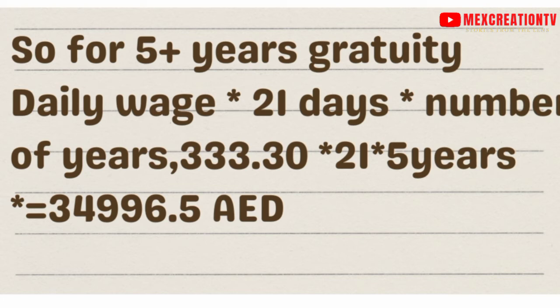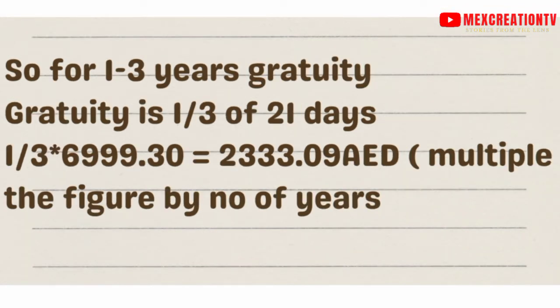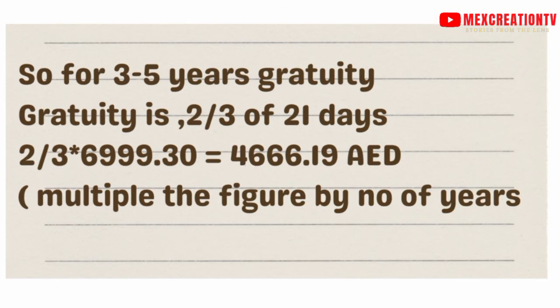If this person does not go beyond five years, we already looked at the value for five years and beyond — that's 21 days of gratuity per year. For one to three years, the gratuity is one-third of 21 days. So that means 1/3 times 699.30, which gives you 233.10 dirhams per year. You then multiply that figure by the number of years served.